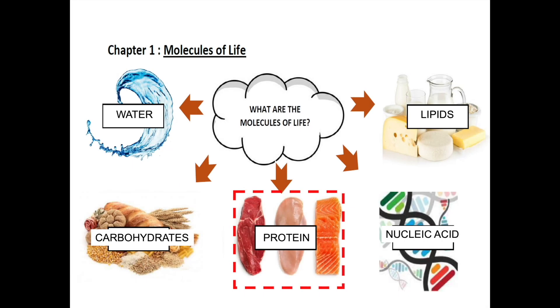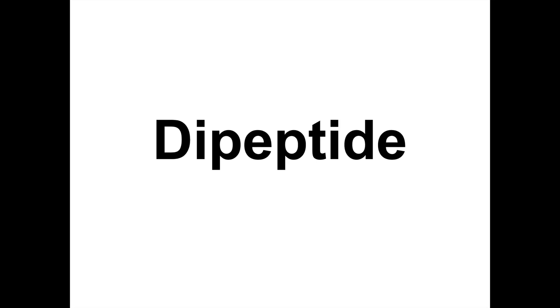Hi guys, let's continue learning about protein by looking at dipeptide. Dipeptide is a protein dimer that is formed via the condensation process between two amino acids. As mentioned in the learning outcome, you need to be able to explain the formation and breakdown of dipeptide.